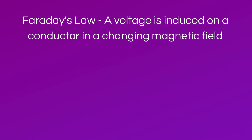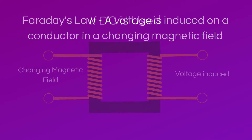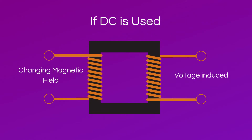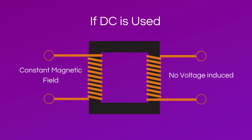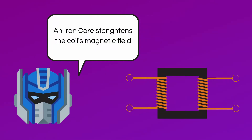That second principle is called Faraday's law, which states that a voltage is induced on a conductor in a changing magnetic field. In a transformer, a voltage is produced on the secondary coil by the changing magnetic field produced by the primary coil. Because a changing magnetic field is required, transformers only work using AC current. If direct current or DC was used, the magnetic field would remain constant and the transformer would not work, because voltage would not be induced on the secondary coil — except during the initial spike when the DC current is first introduced.